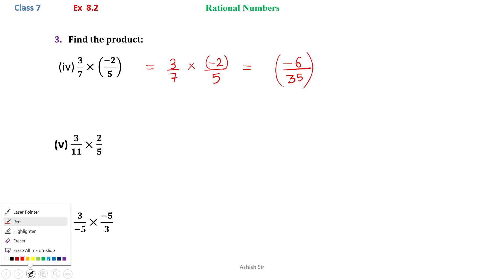Moving on to the next one, next one is 3 by 11 into 2 by 5. Now we see that none of the numerator is divisible by denominator, so we will just multiply numerator with numerator. So 3 multiplied by 2, it is 3 2's are 6, and 11 multiplied by 5, 11 5's are 55. So our answer is 6 by 55.